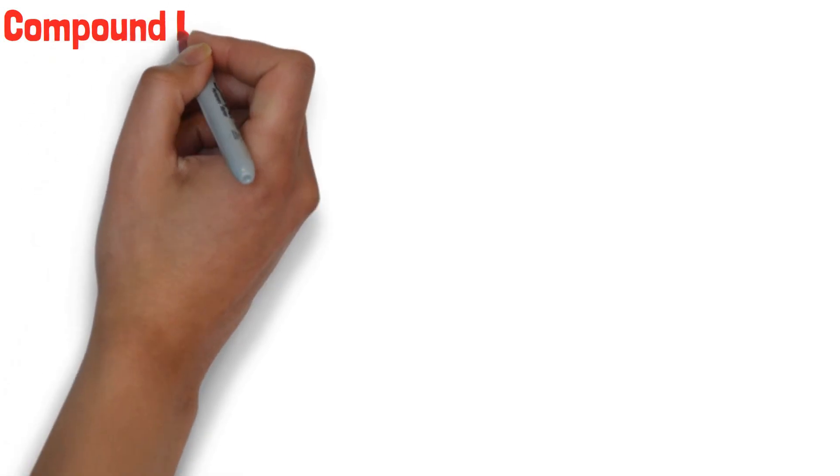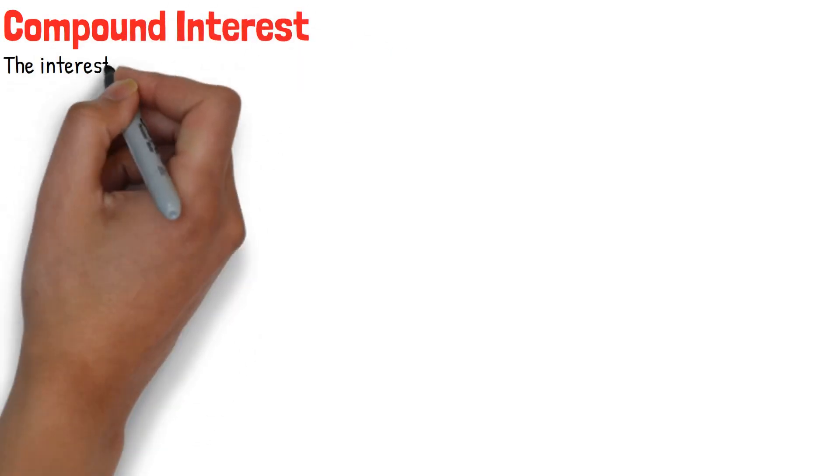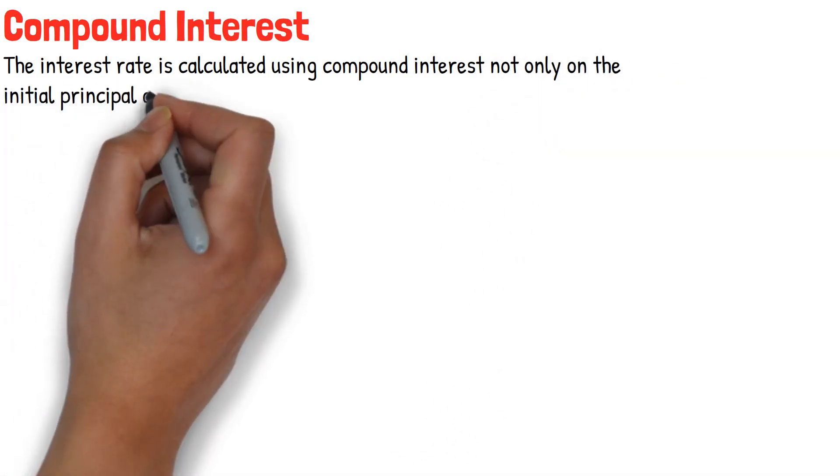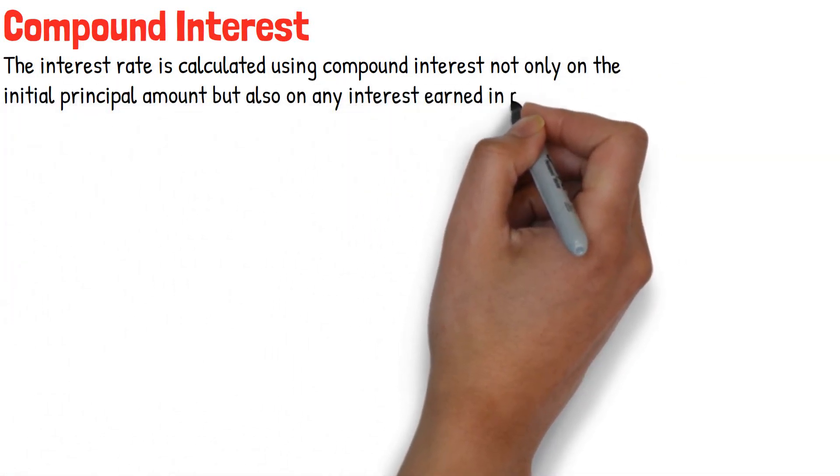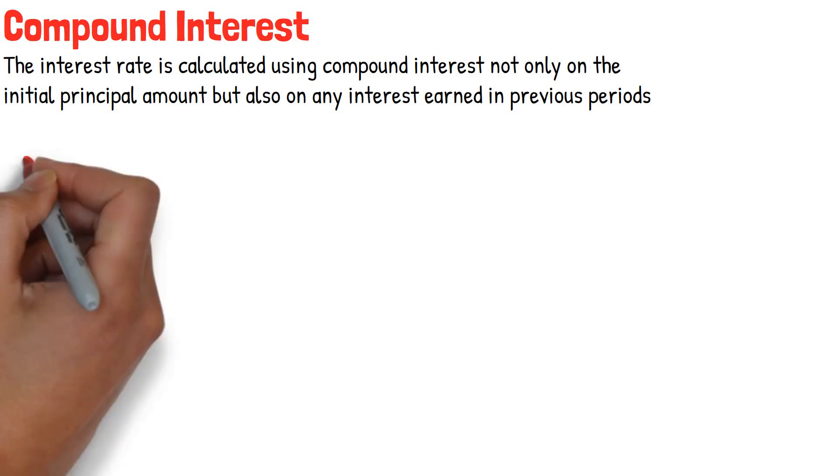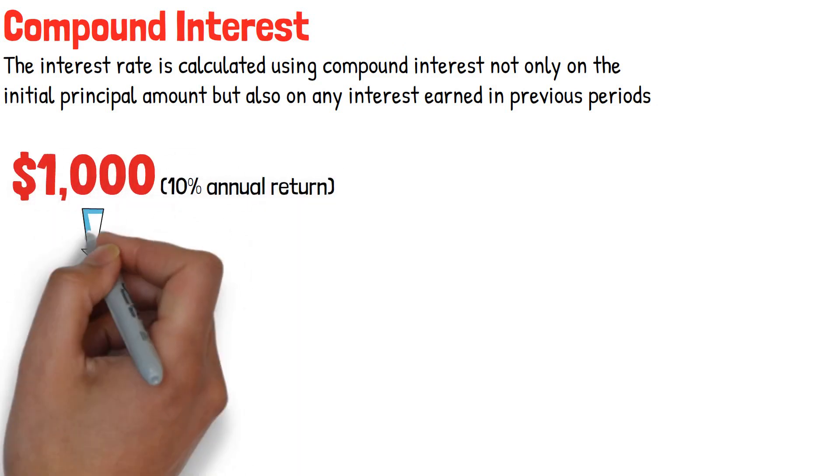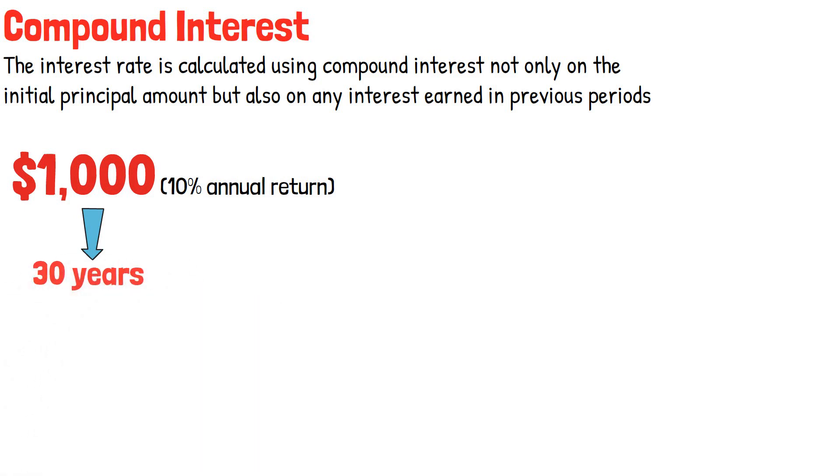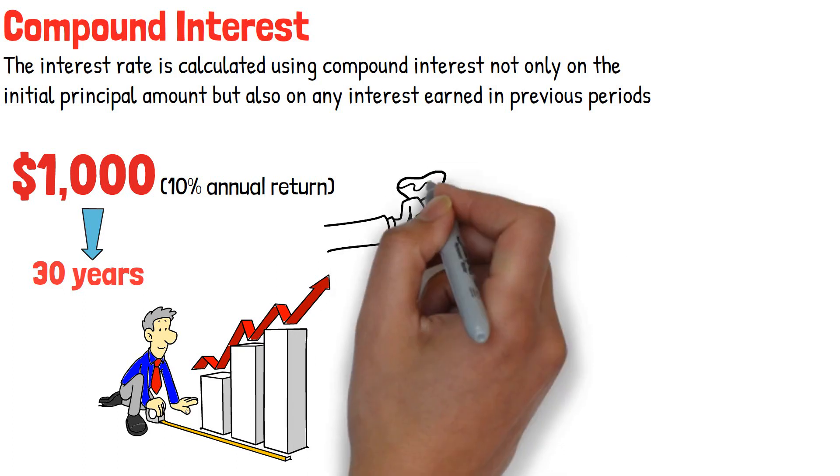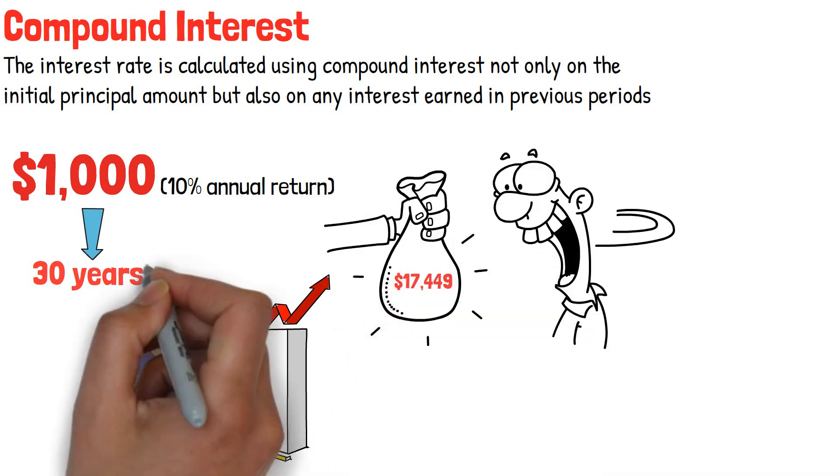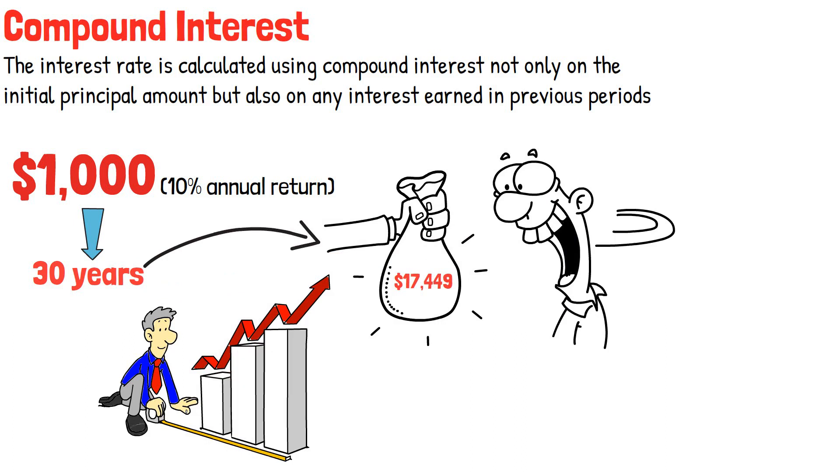Compound interest, on the other hand, is calculated not only on the initial principal amount but also on any interest earned in previous periods. If you invest $1,000 with a 10% annual return and leave it that way for 30 years, compound interest will grow your investment significantly. Your investment would be worth $17,449 after 30 years - $1,000 initial investment plus $16,449 in interest earned. Your investment would be worth over 17 times the initial investment amount.